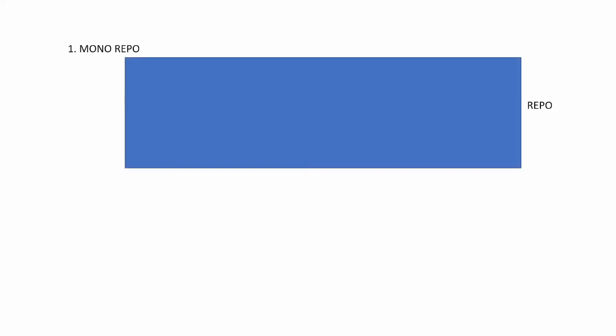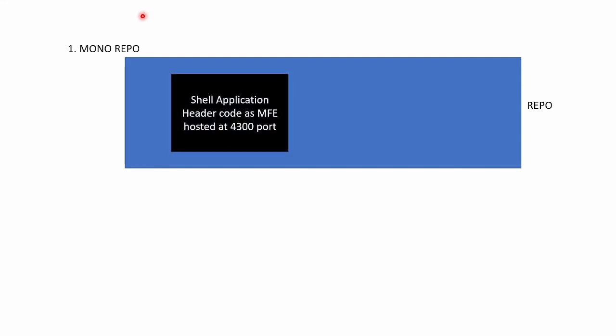As the name suggests, monorepo means we will have a single repository inside which we will have multiple projects or applications. In our case, say we are having one application called shell application inside which we are having header code which we made as MFE. MFE stands for micro frontend and this application is hosted at a server with port number 4300.